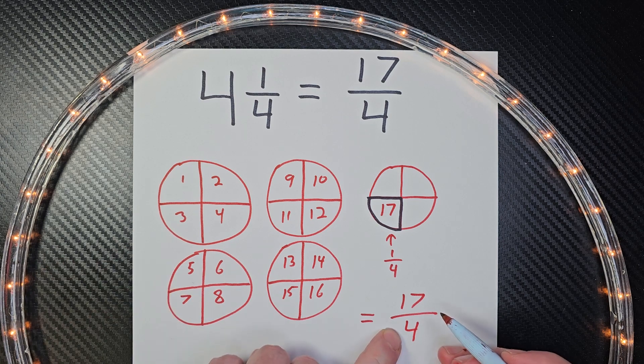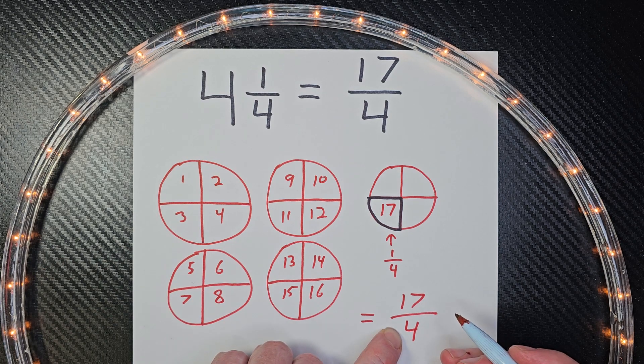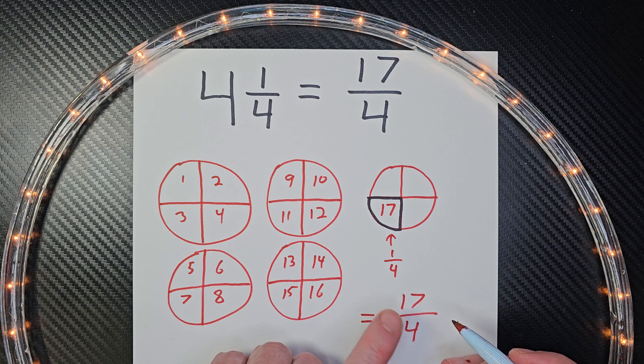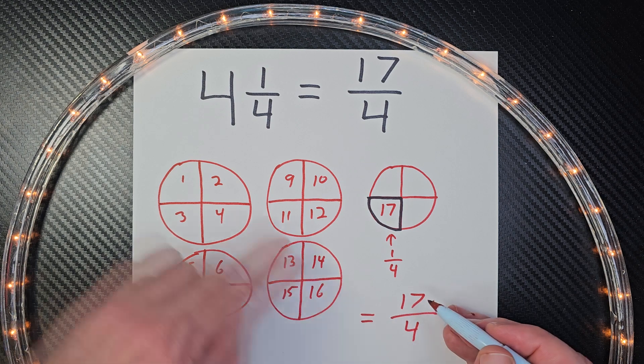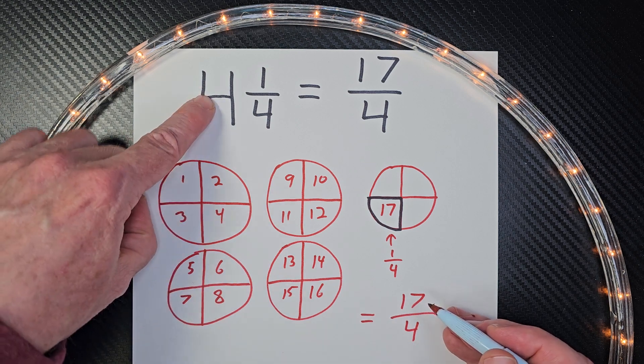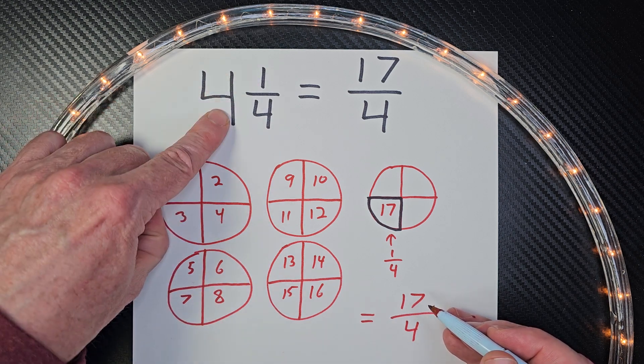This is an improper fraction. You usually would not say this — you would say four and one-fourth.